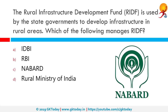The Rural Infrastructure Development Fund, or RIDF, is used by state governments to develop infrastructure in rural areas. The penalties levied on domestic commercial banks who fail to meet Priority Sector Lending targets is the major source of RIDF funding. It is administered by NABARD.